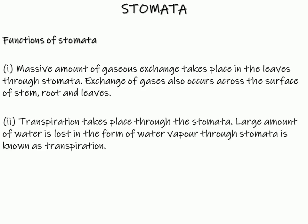Second, transpiration takes place through the stomata. A large amount of water is lost in the form of water vapors through stomata, which is known as transpiration. In previous slides, you have seen that the water reaches through the xylem and ends up into the guard cells.